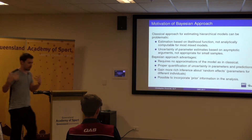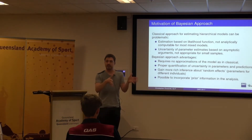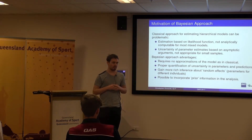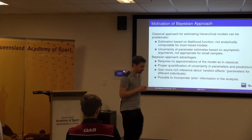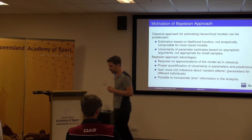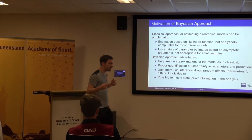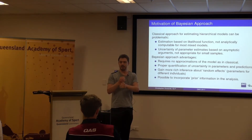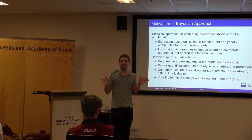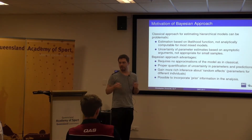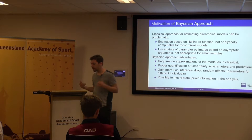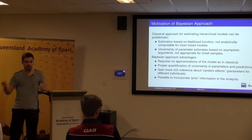So we have a model with a certain number of parameters and we have our data set. Now we want to calibrate the model to the data — essentially we want to estimate the parameters of the model. There are a couple of different frameworks for doing that. One is called the classical framework, and that's based on something called the likelihood function. The likelihood function is just the probability that you observe the data set that you observed, conditional on the parameters of your model. We can think about that as a function of the parameter, and we're trying to find the parameter value that maximises that function — the value that maximises the probability of getting the data.